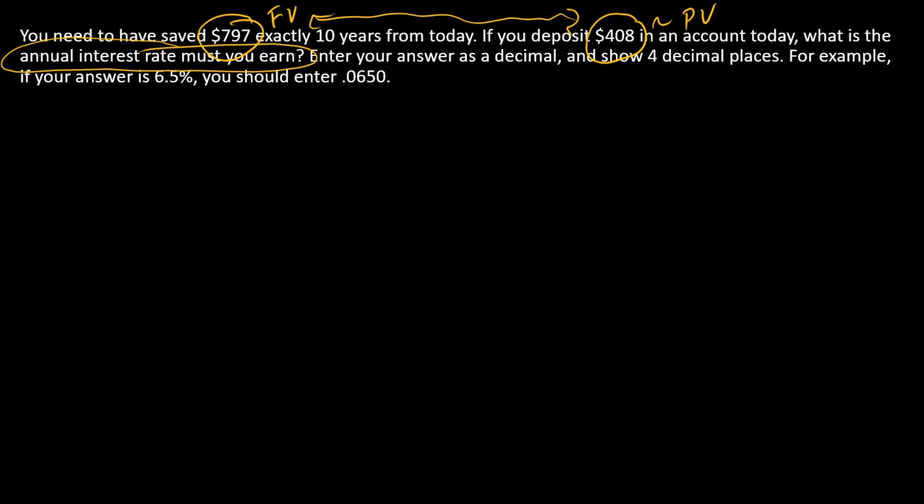And so, as before, we are using this formula: FV at time n is equal to PV at time 0 times 1 plus the discount rate raised to the nth power, except here we are solving for R.